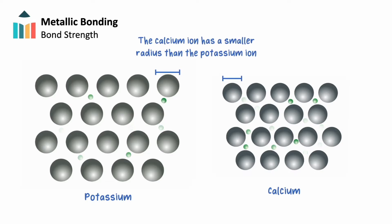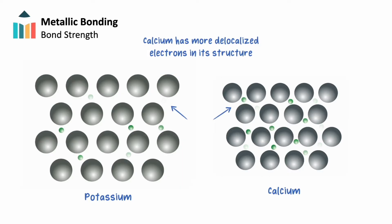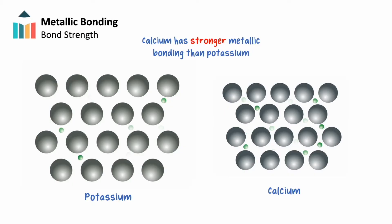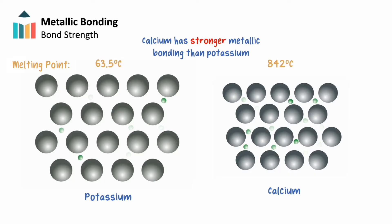This is due to the increased effective nuclear charge experienced by the remaining electrons in calcium. This, coupled with calcium's increased number of delocalized electrons, allows us to expect calcium to demonstrate stronger metallic bonding than potassium. This is reflected in their melting points: the melting point of potassium is 63.5°C, while calcium's melting point is 842°C, proving that calcium has much stronger metallic bonds.